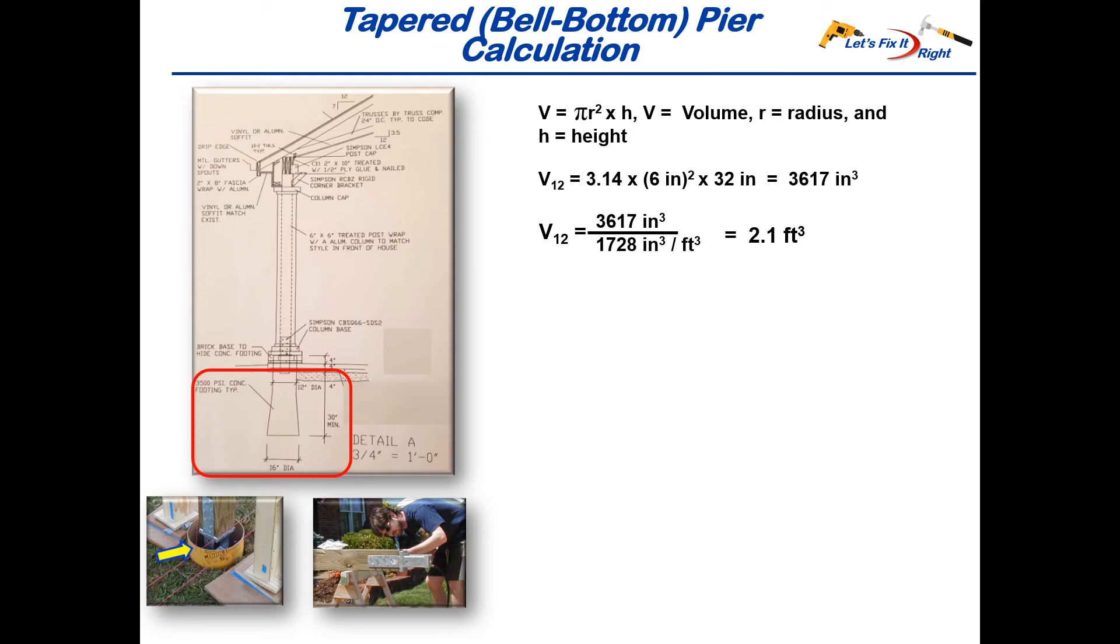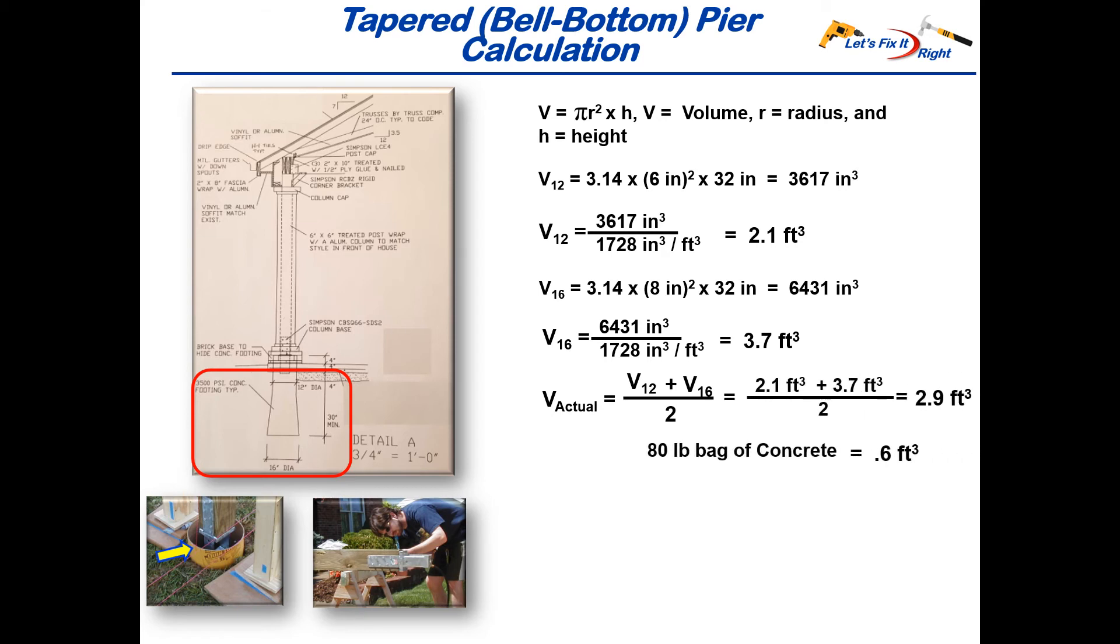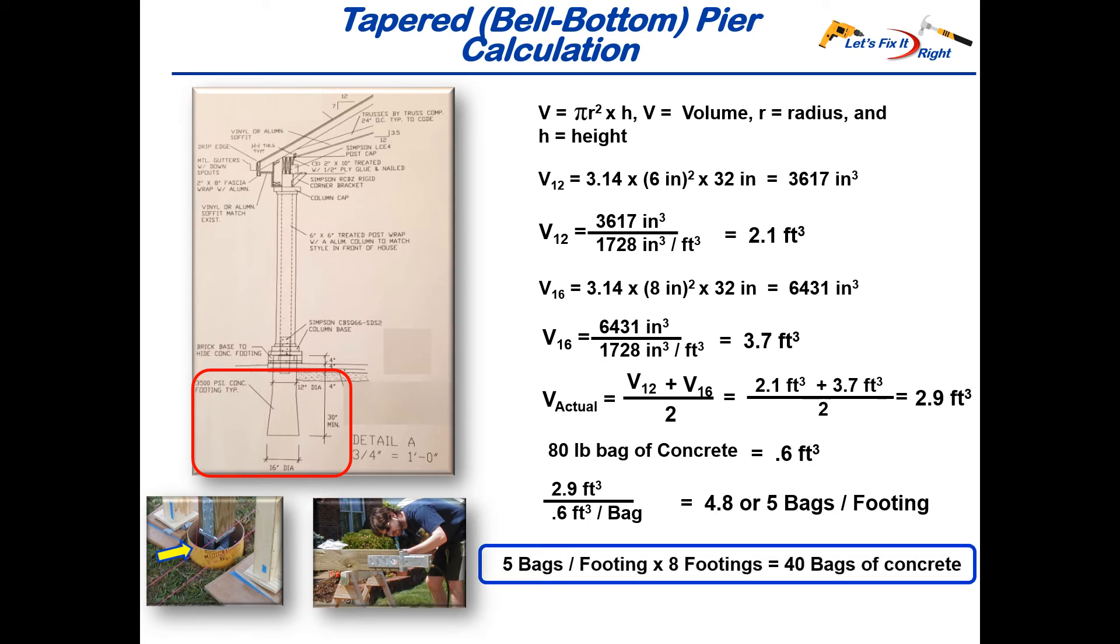Dividing this by 1728 cubic inches per cubic foot gives us a volume of 2.1 cubic feet for each 12-inch diameter pier. Similarly, the 16-inch diameter pier is 3.14 times 8 inches squared times a height of 32 inches, which is 6,431 cubic inches or 3.7 cubic feet. In this case, the actual volume is the average of the 12-inch and 16-inch diameter piers, which is 2.9 cubic feet. Dividing this by 0.6 cubic feet per concrete bag gives us 5 bags per footing and a total of 40 bags of concrete for the entire job with its 8 footings and columns.